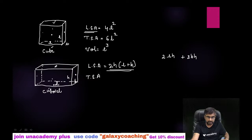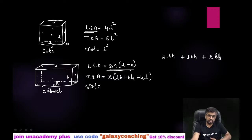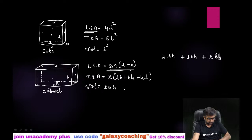For total surface area of a cuboid, we add the top and bottom to the four walls. The bottom area is l × b, and the top is also l × b. Taking 2 common, total surface area = 2(lb + bh + hl). For volume, multiply base area with height: base area is length × breadth, multiplied by height h. So volume = l × b × h.